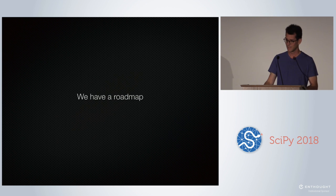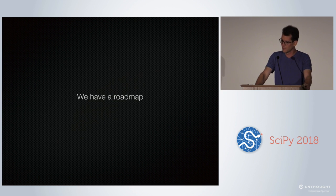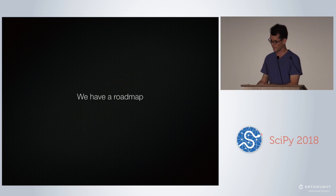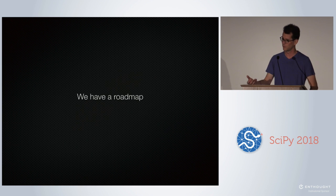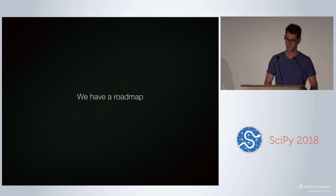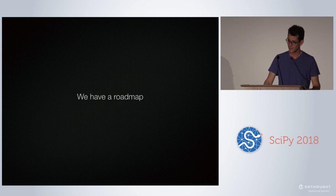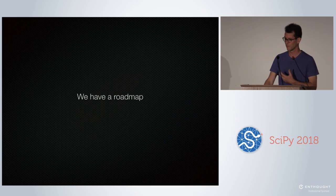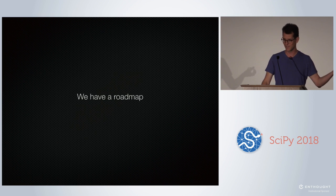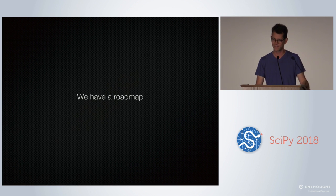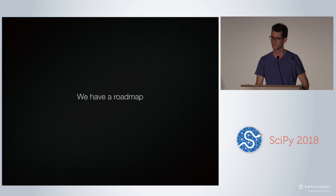Then we have a roadmap. A roadmap is important for a couple of reasons. It's a good place to document where you want to go, what are the big-ticket items you want to fix in your library, new features you want to introduce. It matters to new contributors — they're going to start somewhere random unless you tell them where you really need help. And it matters to companies: if someone wants to sponsor your library — give money or people time to help improve it — it's one of the first things they'll look at. If you don't have it, they might say these guys aren't really serious, they don't know what they want to do.